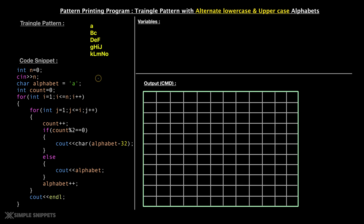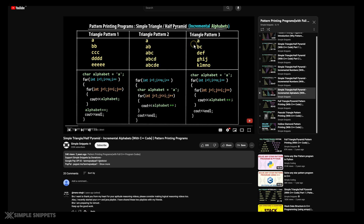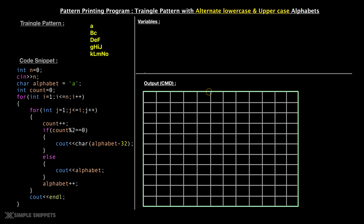Before we start understanding the code snippet, please make sure you watch the other video which is the triangle pattern three, where we printed A, B, C, D, F, because the looping statement is pretty much the same with some extra changes. That will help you understand the logic, and then we have some more additions to the logic which create this alternating lower and uppercase. To create these lower and upper cases, we need to understand the concept of ASCII values of these individual characters.